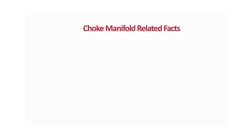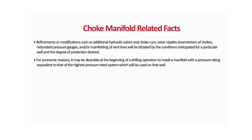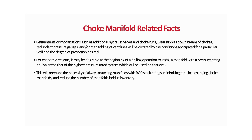Refinements or modifications such as additional hydraulic valves and choke runs, where nipples downstream of chokes, redundant pressure gauges, and manifolding of vent lines will be dictated by anticipated well conditions and the degree of protection desired. For economic reasons, it may be desirable to install a manifold with a pressure rating equivalent to the highest pressure rated system to be used on that well, minimizing time loss changing choke manifolds and reducing the number of manifolds held in inventory. Screwed connections are optional only for the 2M manifold; all others shall be welded or flanged.